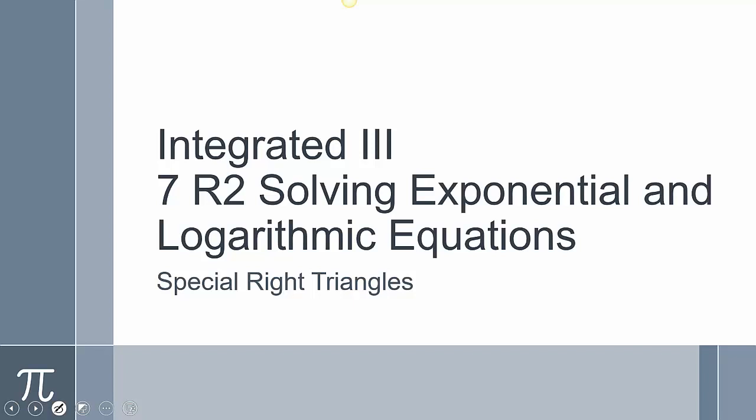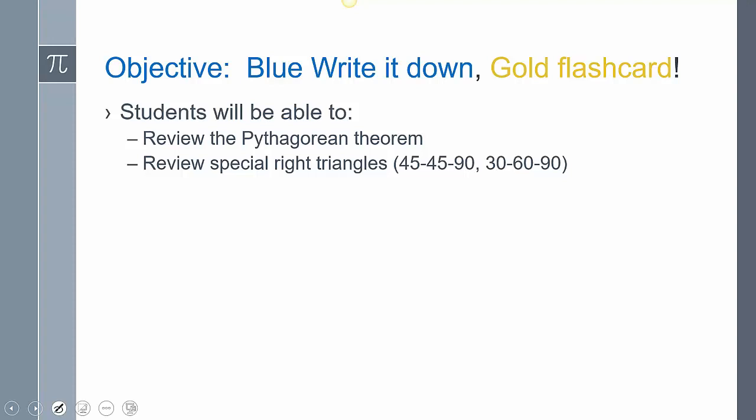Chapter 7, review number 2, we're going to take a look at special right triangles. So we're going to review the Pythagorean Theorem, and we're going to review the special right triangles, the 45-45-90 and the 30-60-90.